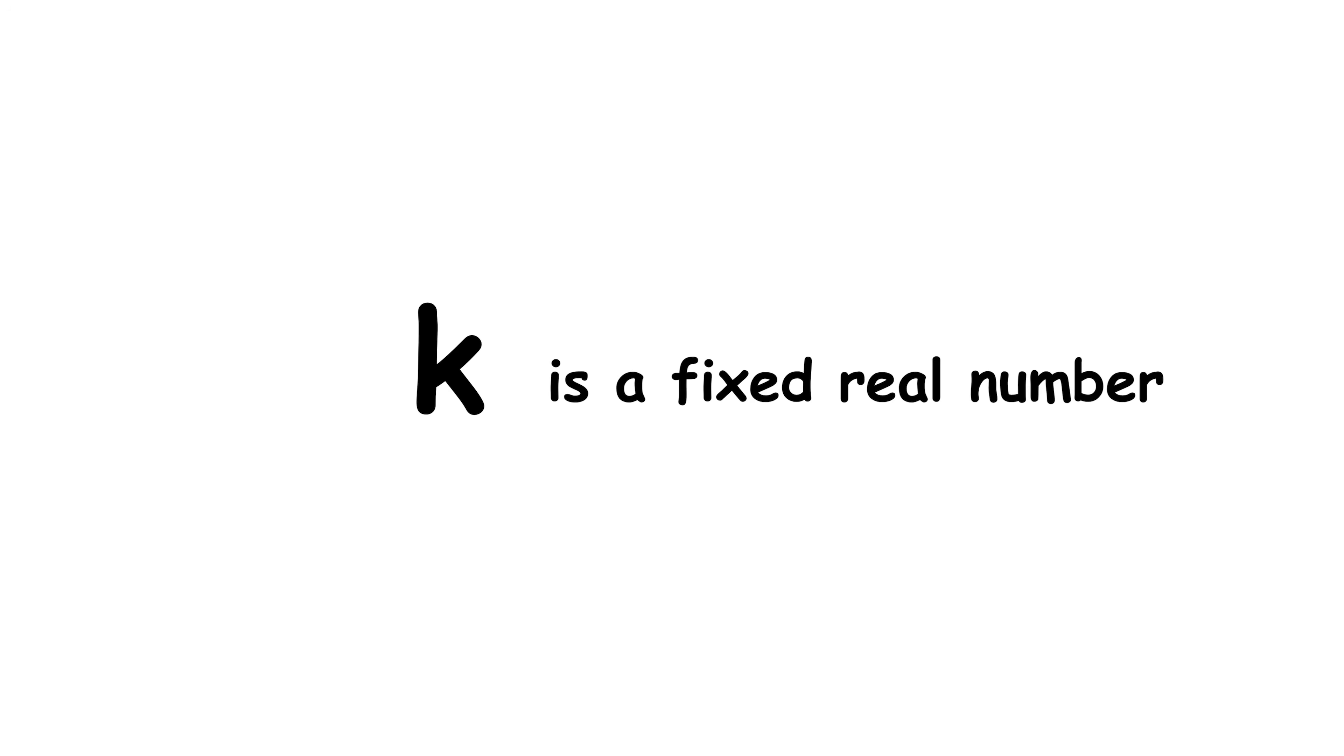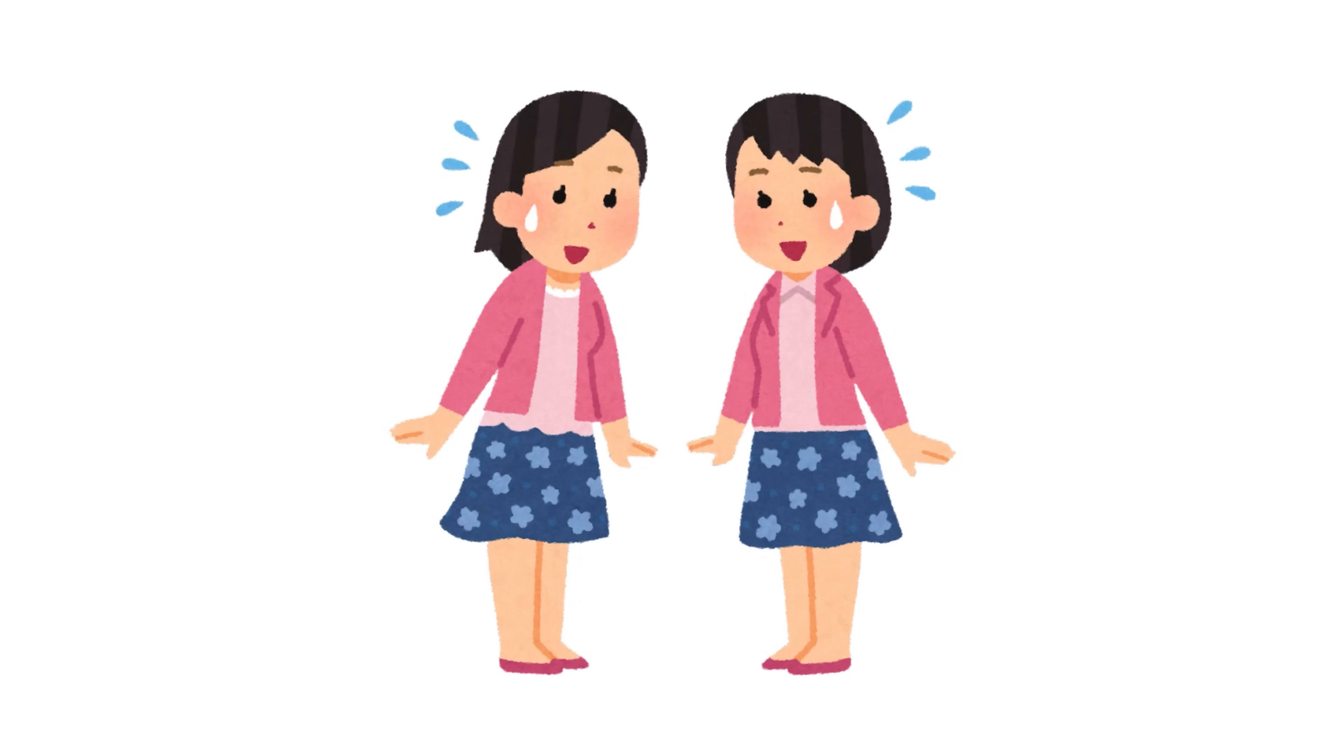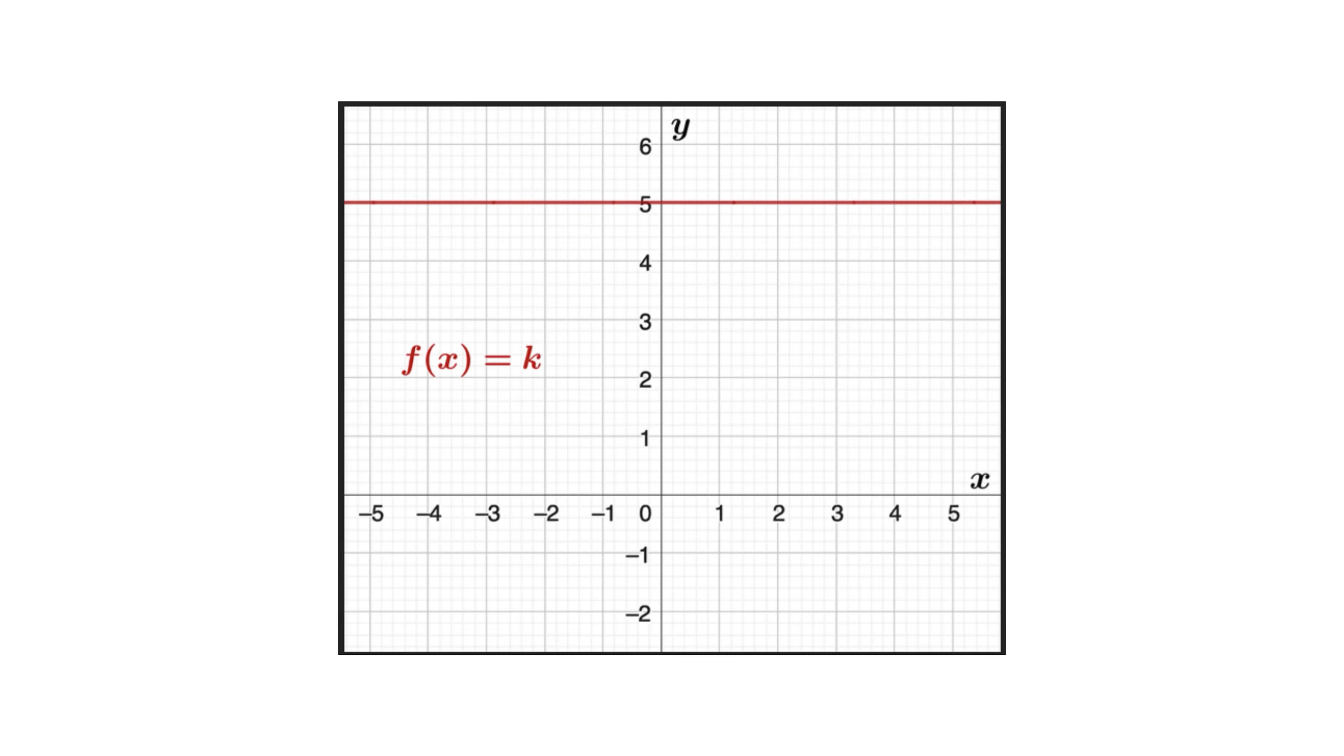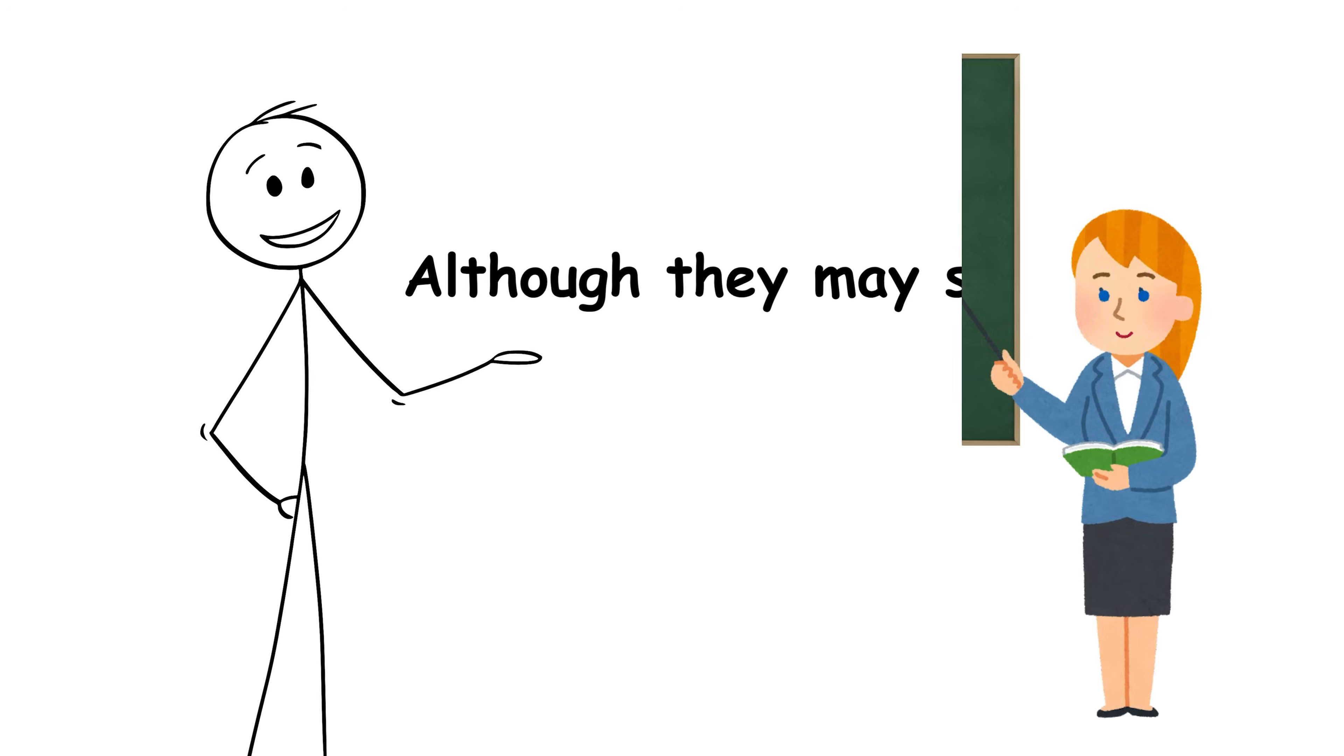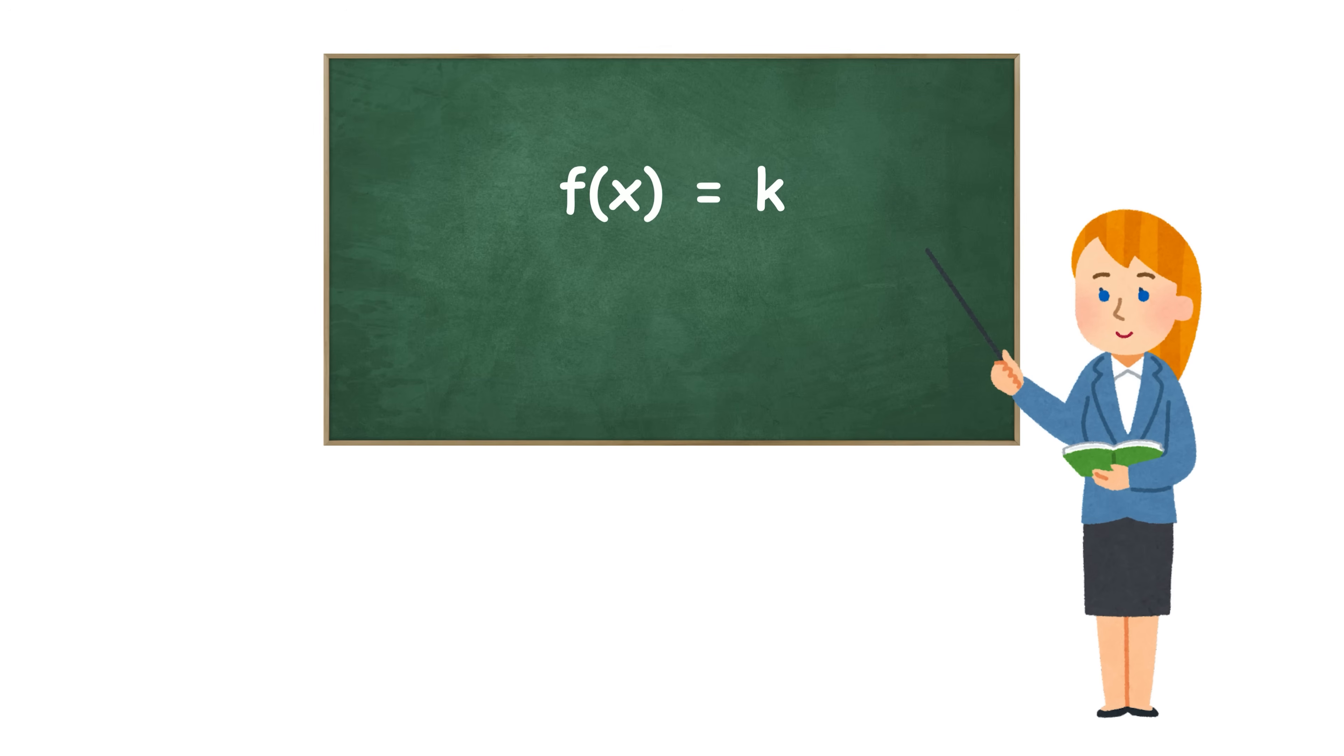A constant function has the form f of x equals k, where k is a fixed real number. No matter what value x takes, the result will always be the same. Its graph is a horizontal line crossing the y-axis at the value k. It represents situations without change, such as constant temperature or zero velocity. Although they may seem simple, these functions are key in mathematical analysis.